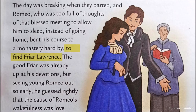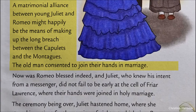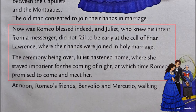Friar Lawrence saw Romeo and guessed the cause — that Romeo's wakefulness was love. According to Friar Lawrence, it was the best time to make peace between the Capulets and Montagues by joining their hands in marriage. Later, Juliet received Romeo's message and reached the cell of Friar Lawrence, where both Romeo and Juliet were joined in holy matrimony. Now they were husband and wife.